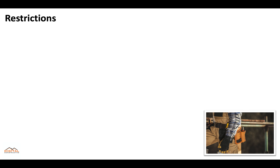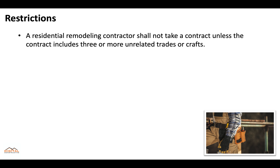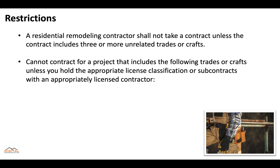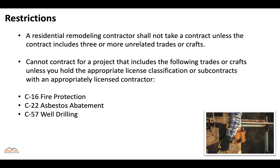There are certain restrictions for the B2 license. A residential remodeling contractor shall not take a contract unless the contract includes three or more unrelated trades or crafts. You would not be able to contract for a project that includes any of the following trades or crafts unless you hold the appropriate license classification or subcontract it out to an appropriately licensed contractor: C16 fire protection, C22 asbestos abatement, and C57 well drilling.